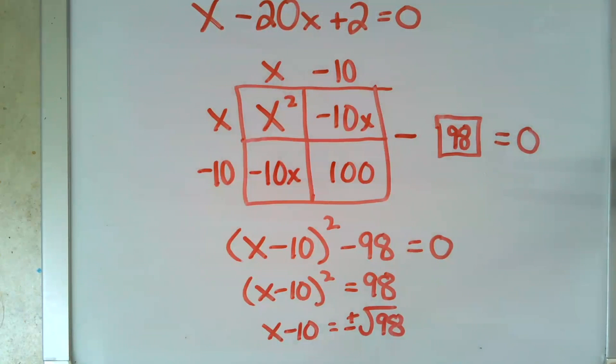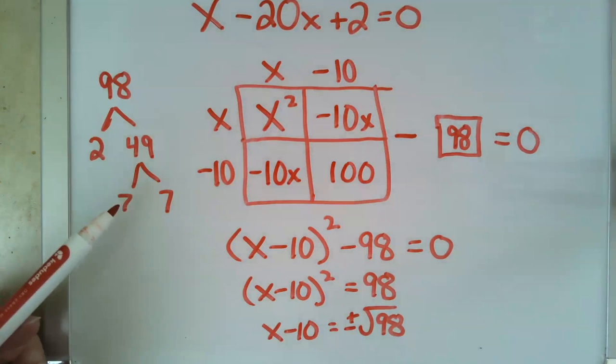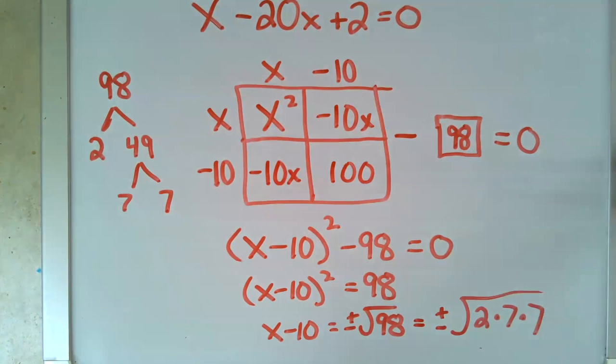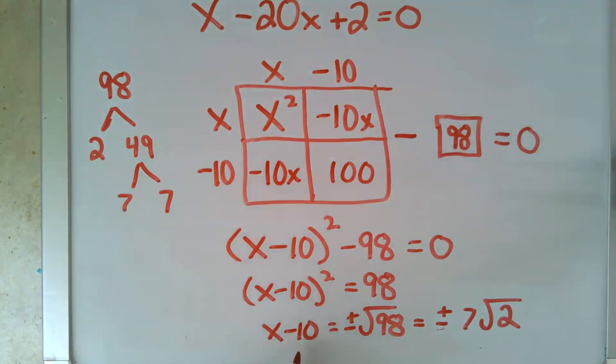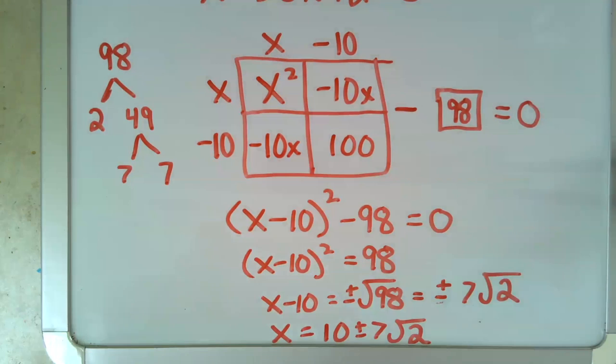Now I need to simplify root 98. If you don't remember how to simplify square roots, take a look at this video here. Otherwise, let's go ahead and do that on the side by making our factor tree. So I see that 98 factors into 2 times 7 times 7. And I remember that 7 times 7 under the square root equals 7 outside of the square root. And then my final step is I need to get rid of this negative 10 by adding 10 to both sides. And so my two answers are 10 plus 7 root 2 and 10 minus 7 root 2.